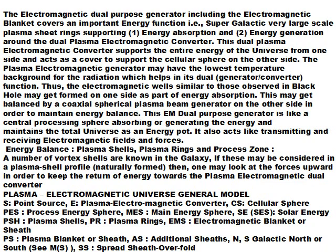Electromagnetic wells, similar to those observed in black holes, may also get formed on one side as part of the energy absorption. The Universal Plasma Energy Model was presented in 1991 to IEEE Plasma Phase Plasma Groups. This report has been incorporated to advance further concepts in order to provide an energy balance type of structure, which automatically leads to cosmic universe energy part structures. The energy balance incorporates plasma shells, plasma rings, and a process zone.